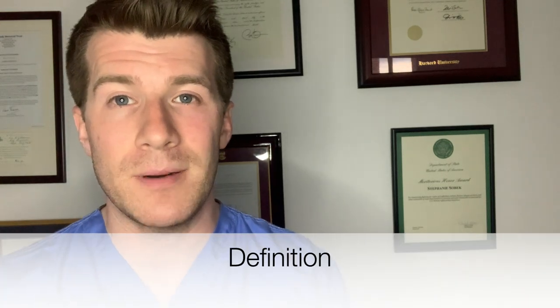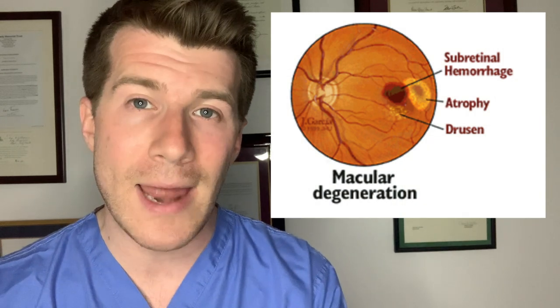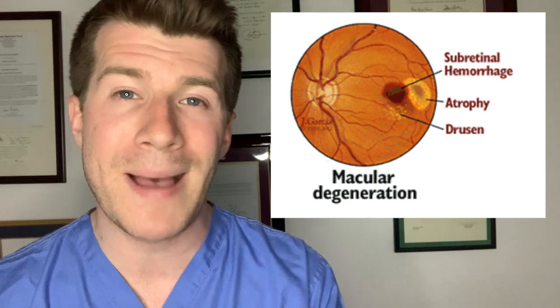Age-related macular degeneration, also known as AMD, is the term that applies to changes without any other obvious precipitating cause which occur in the central area of the retina, also known as the macula, in people aged 50 years and over. The causes of AMD are unknown but we do know about certain risk factors, including smoking, a family history of AMD, genetic factors, and age — if you're aged over 50 you're more likely to develop AMD.